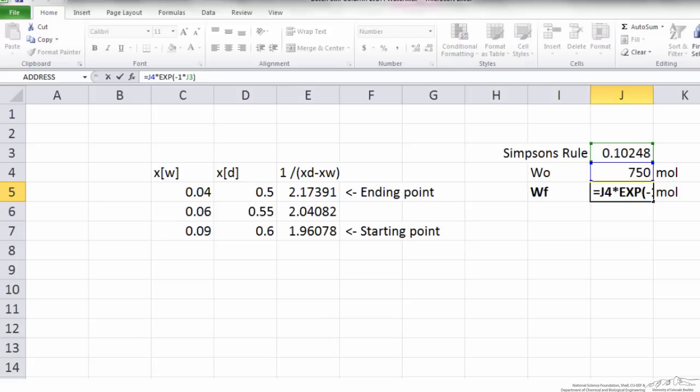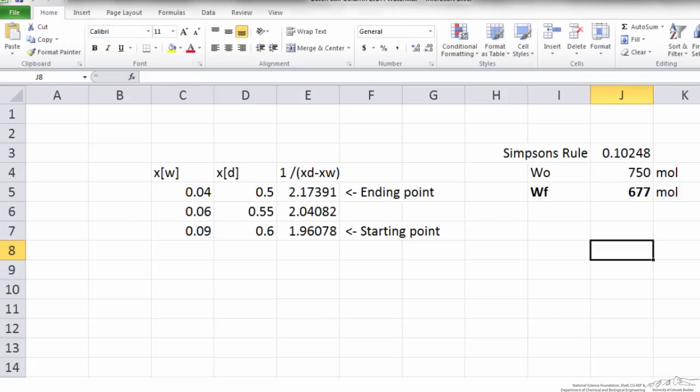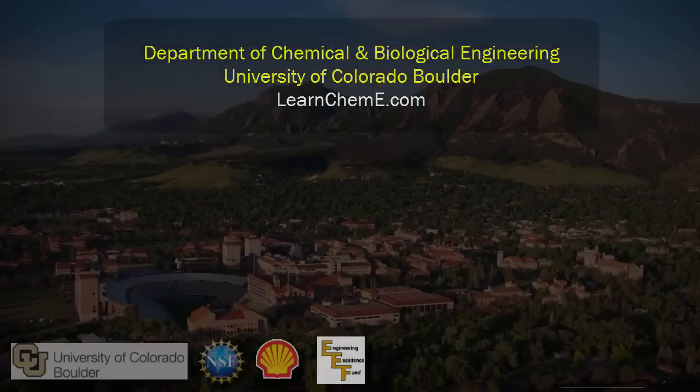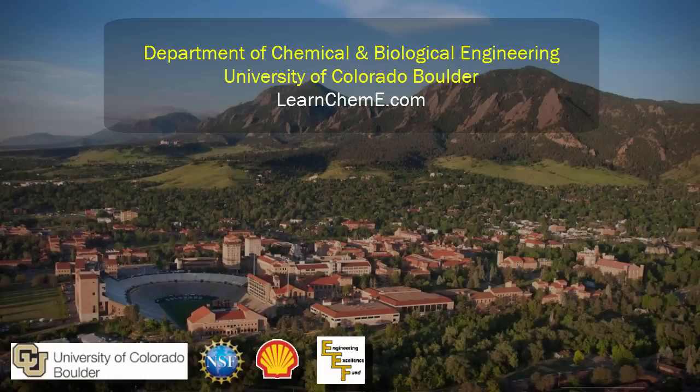I've done so here in Excel, where the final amount of material in the reboiler equals the initial number of moles times e^(-Simpson's rule sum). When we evaluate that, the final number of moles in the reboiler is 677 moles.